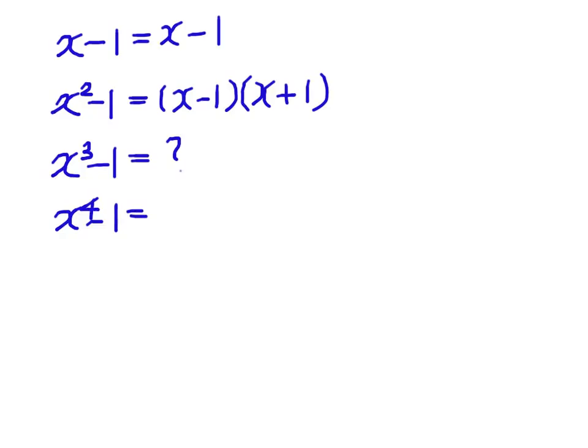And the last one, x to the power 4 minus 1. It seems that there is no obvious factorization method for x to the power 4 minus 1. But what if we consider x to the power 4 as the square of x squared? We can find that this is a difference of two squares format.